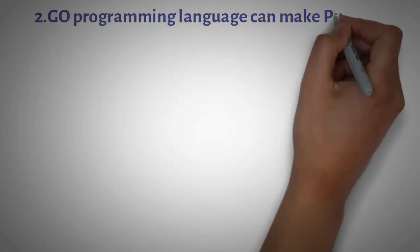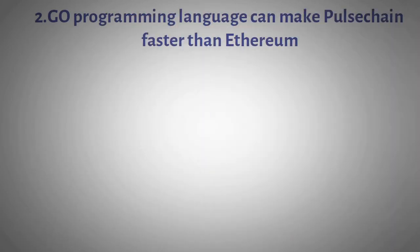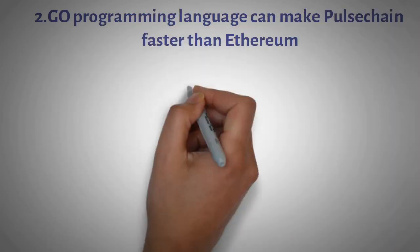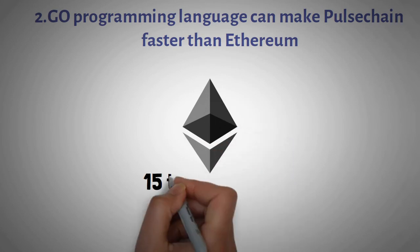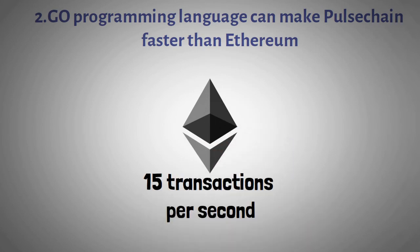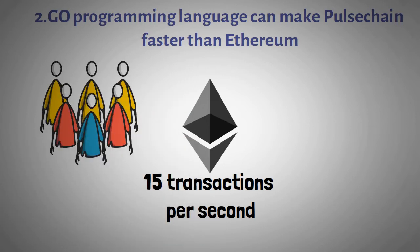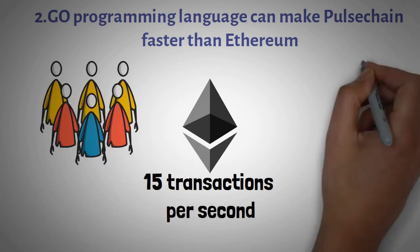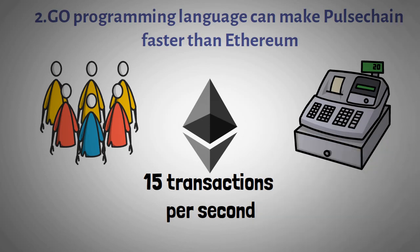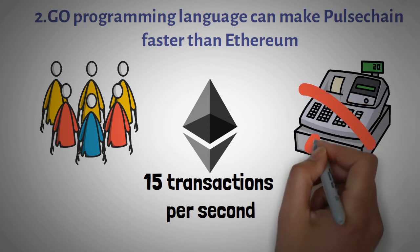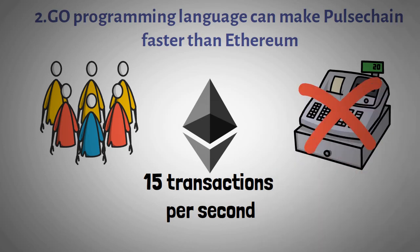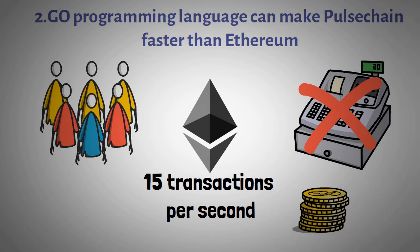Secondly, Go can make PulseChain faster than Ethereum. The average transaction speed on Ethereum is about 15 transactions per second. However, with Golang, the team at PulseChain believes that they can increase that to thousands of transactions per second. This is because on PulseChain, there would be no need for the EVM. The lack of the EVM would also lead to significant reductions in the time needed to complete transactions.